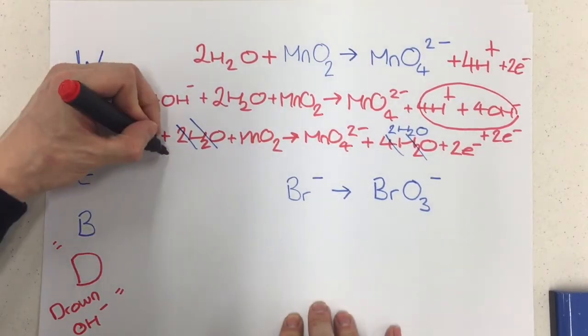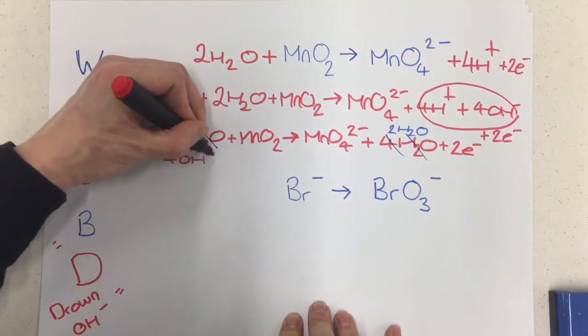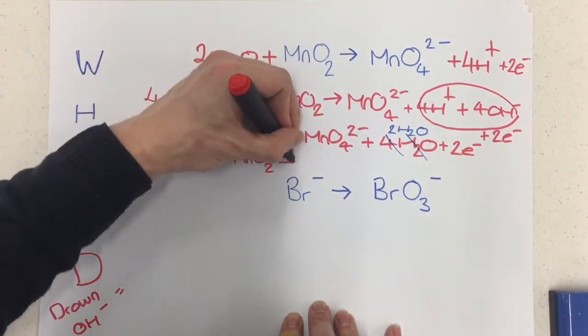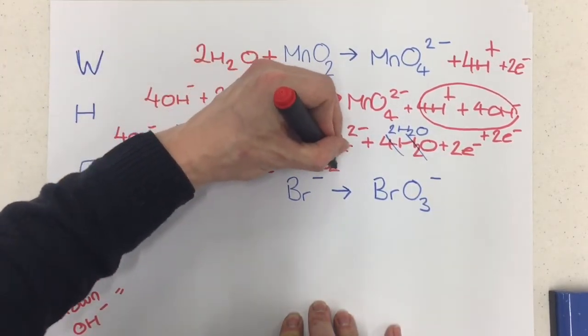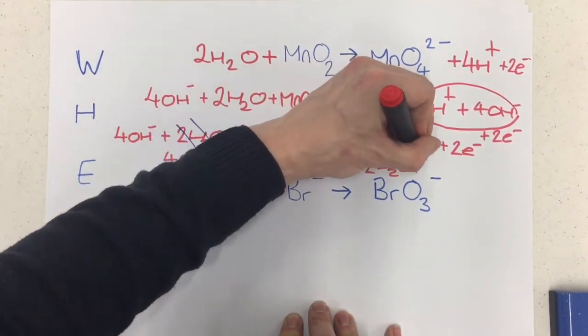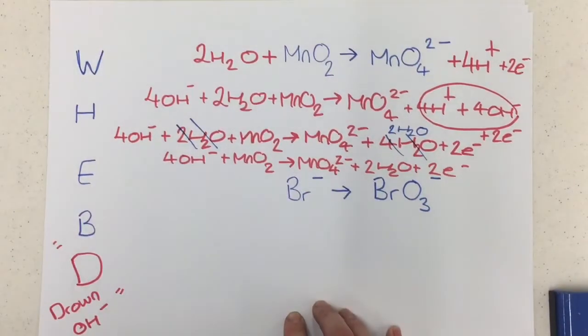And that gives me my final answer for the same reaction but under alkali conditions, which is 4OH- plus the MnO2, which reacts to form the MnO4^2-, 2H2O and 2e-. And it works. The whole thing is balanced in terms of charge, atoms, electrons. Everything there works. It's absolutely crystal.